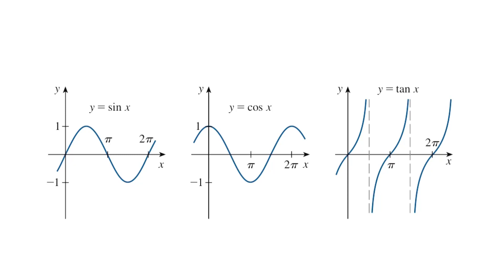For tangent x, which equals sine x over cosine x: at x=0 it is 0, at π/2 it is infinite, at π it is 0, and at 3π/2 it is infinite. Please remember and memorize these three graphs — you will need them to solve problems in calculus.